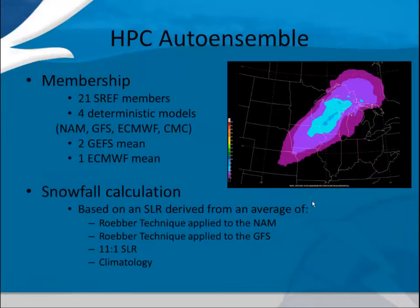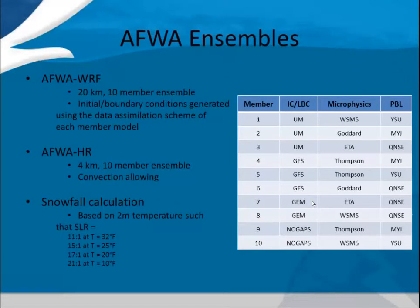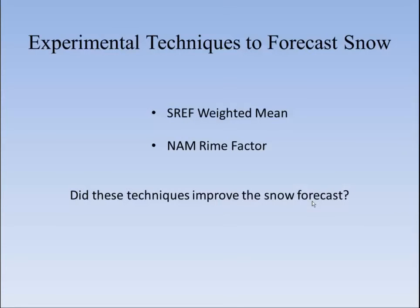The auto-ensembles that HPC uses apply the Rohrer technique to the NAM and GFS with an 11 to 1 snow ratio, and they also add climatology to the ensemble. For the alpha ensembles, it appears that mostly temperature is used to determine the snow-to-liquid ratio. That's the guidance they use to calculate the snowfall accumulation.